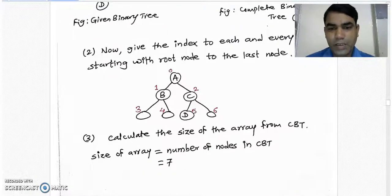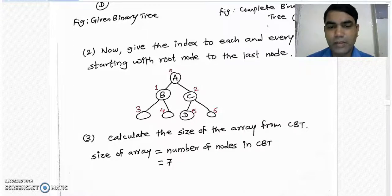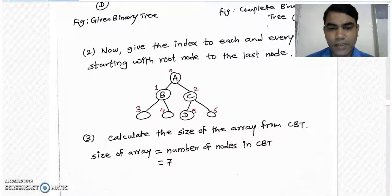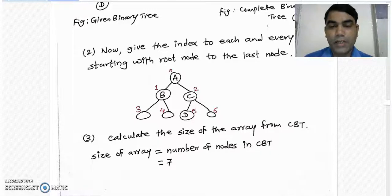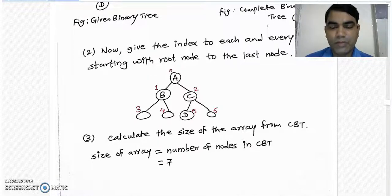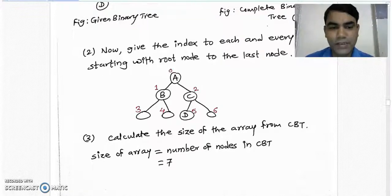In step 3, we calculate the size of the array from the complete binary tree. The formula to calculate the size of the array from the complete binary tree is size of the array equals to the number of nodes in the complete binary tree. In our complete binary tree, the total number of nodes are 7. That's why the size of the array is 7.